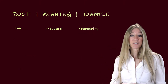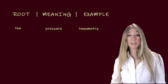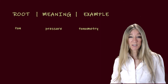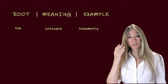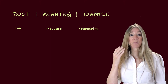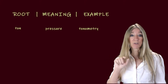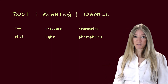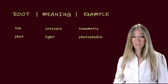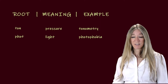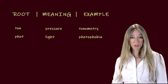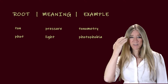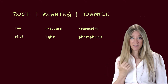The next root, ton or tone, meaning pressure. Tonometry is measurement of the pressure in the eye, especially IOP — intraocular pressure. The next root, phot, meaning light. An example: photophobia, which is high sensitivity of the eye to light.